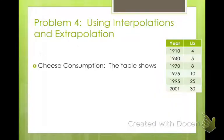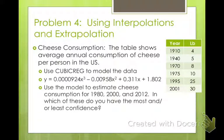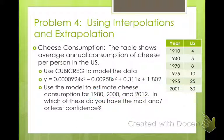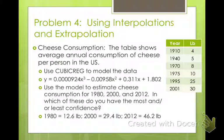If we want to find the estimated consumption to fit this data — for 1980, 2000, and 2012 — what do we plug in? For 1980, all x values become 80. For 2000, all x values would be 100. And for 2012, all x values would be 112. You just plug them in and simplify. I got: in 1980, 12.6 pounds; in 2000, 29.4 pounds; and in 2012, 46.2 pounds.